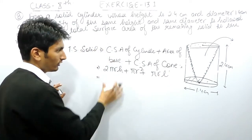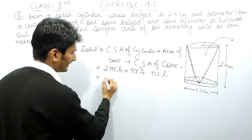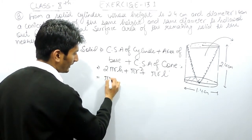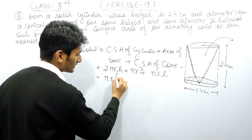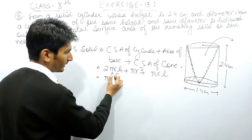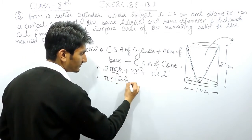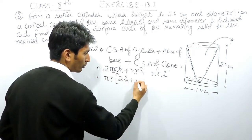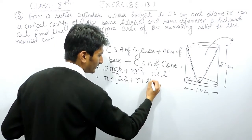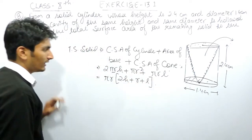Before solving this, we can take πr as a common factor. So if πr is taken out, from 2πrh we get 2h, from πr² only r will remain, and from πrl, l will remain. So the expression becomes πr(2h + r + l).